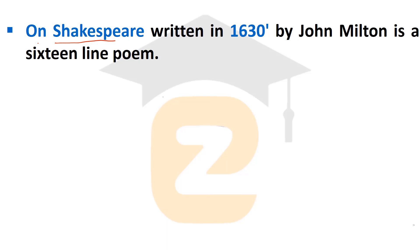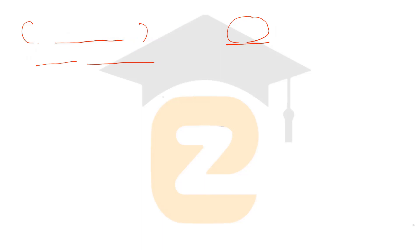On Shakespeare is an important work written by John Milton in 1630. It is a 16-line poem written in praise of Shakespeare, because John Milton was a great admirer of Shakespeare's work and masterpiece, and praised him greatly in this poem.